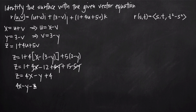We end up with 4x minus y minus z equals negative 4. Looking at this equation, we can tell we have the equation of a plane, because all variables x, y, and z are first-degree linear values — there are no squared terms. So we know this is the equation of a plane, and we can say that the surface given by the vector equation R of u, v is a plane.